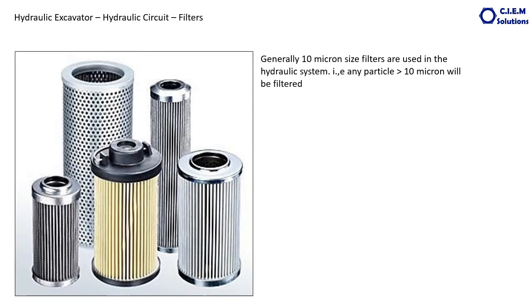Next are the filters. Two types of filters are used in the hydraulic excavator. One is the mainline filter made with a paper element — generally 10 micron size — placed in the return line of the hydraulic circuit because paper elements cannot withstand mainline pressure of around 300 bar. For the mainline itself, high pressure filters made with steel mesh are used.